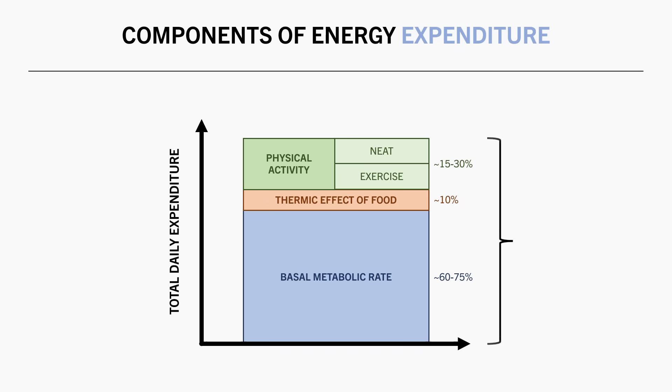Physical activity generally contributes around 15-30%, depending on activity levels. So essentially, when we add together the energy burned from each component, we get our total daily energy expenditure. Let's now look at each component in a little more detail.